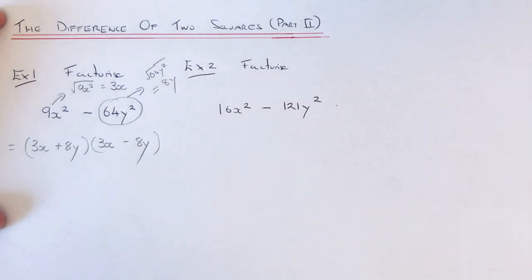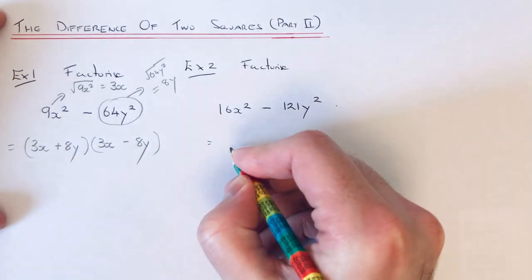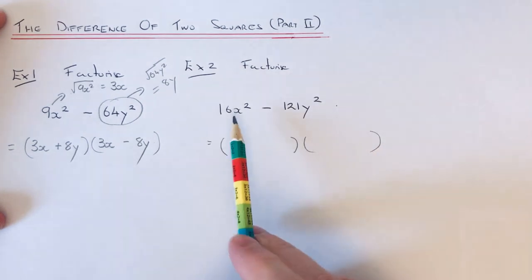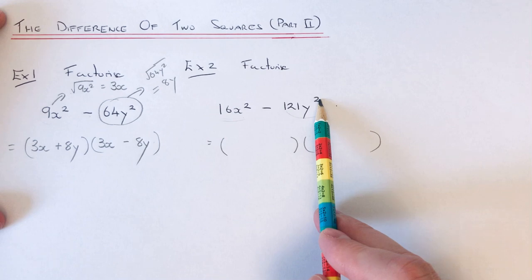In the second bracket, so it's minus 8y. You can check this to make sure it gives you 9x squared minus 64y squared by expanding and simplifying, and you'll find it will work. So let's have a look at the second example. So again, if you spot you've got a squared term here and a squared term here and a minus in the middle.